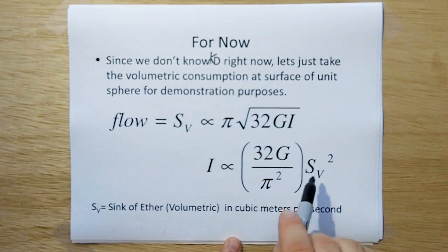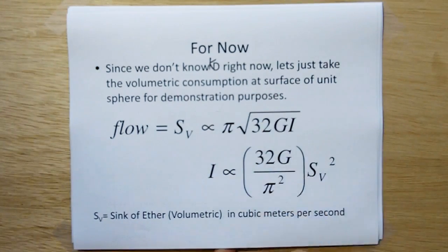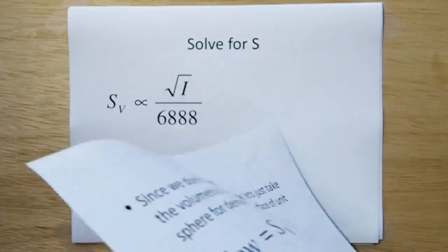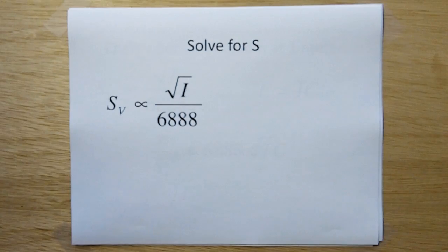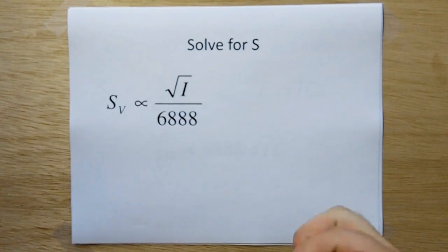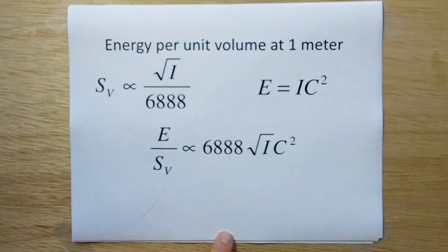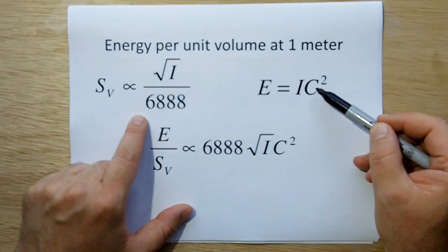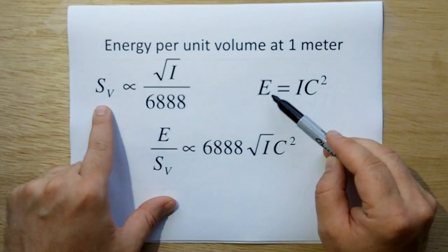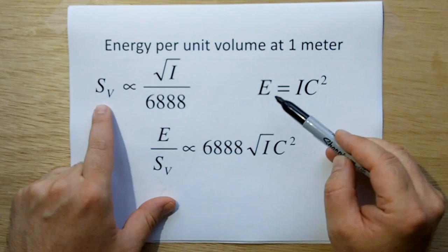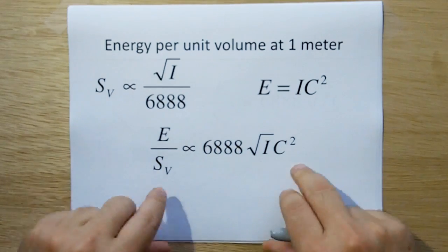And if you solve for I, you end up with this equation here. And these little things here mean they're proportional to, they're not exact, they're proportional to. And we solve for S, so I guess we really wanted to solve for S, not for I. And we come up with that it's proportional to the square root of I divided by a constant 6888. So we put that here, we put E equals IC squared. And what we're going to want to come up with is we want to come up with the energy per unit volume of ether. And so we divide E by SV and we end up with this factor here.